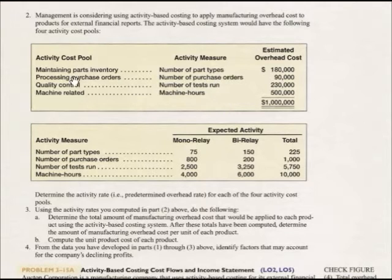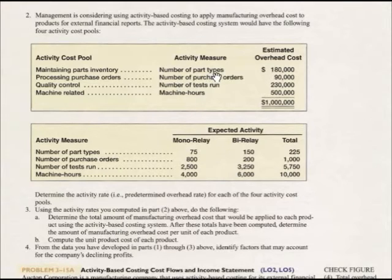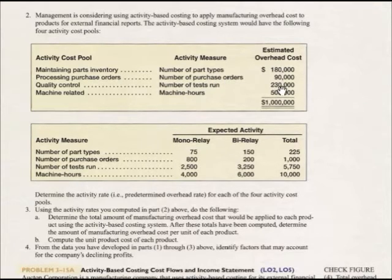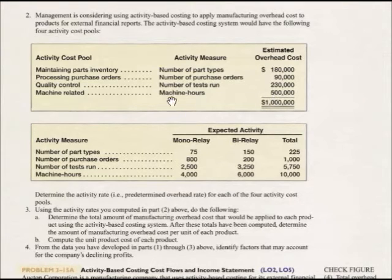We take the million dollars in estimated overhead and break it down into four activities. First, maintaining parts inventory costs $180,000, measured by the number of part types. Second, processing purchase orders costs $90,000, measured by the number of purchase orders. Third, quality control costs $230,000, measured by the number of test runs. Finally, machine-related costs total $500,000, measured by machine hours.